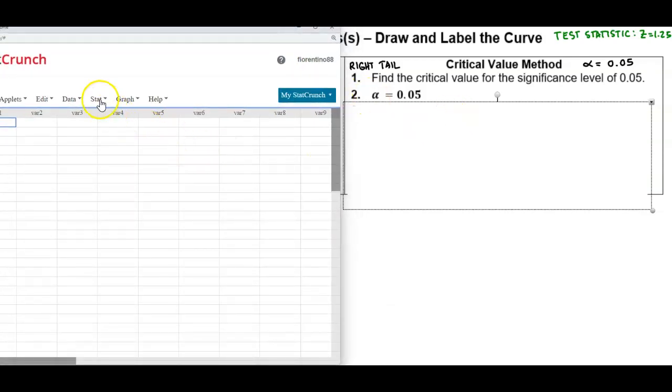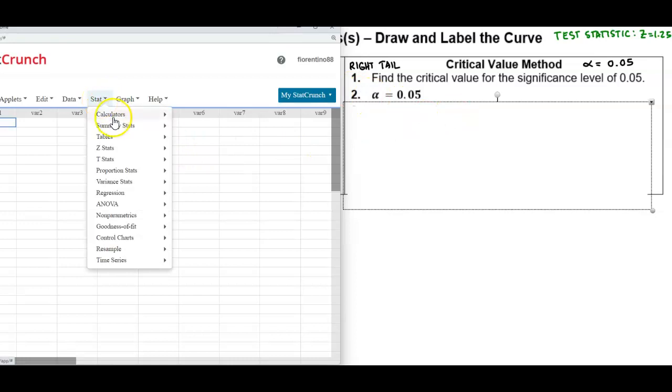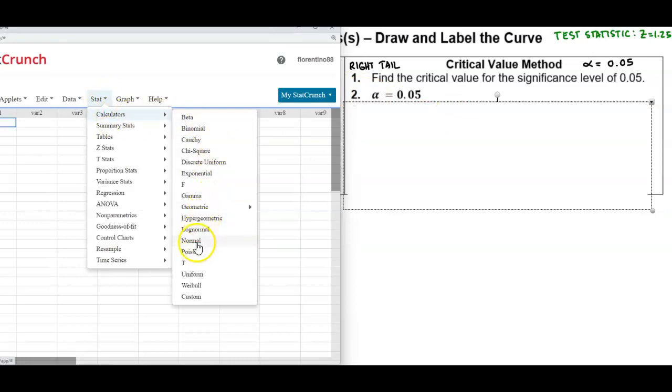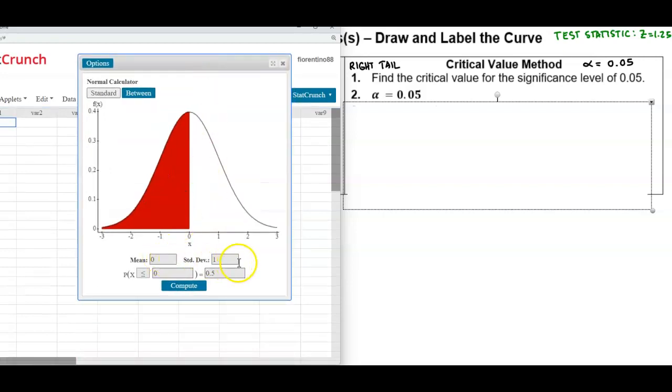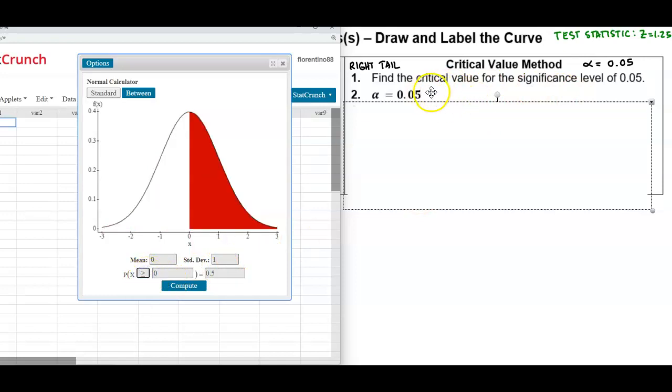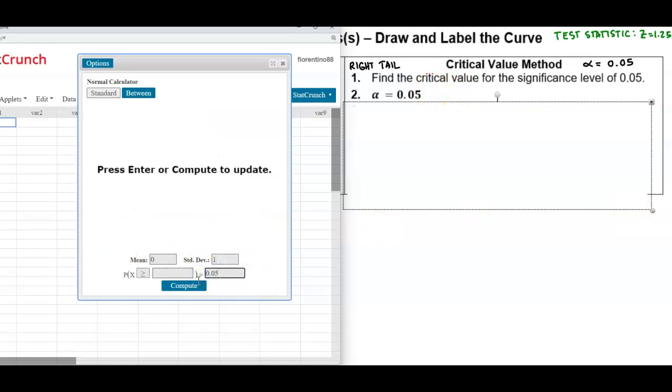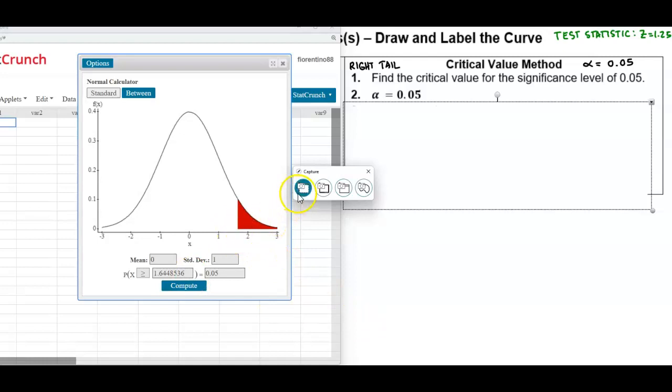So we're going to come in here, go to stat and then go to calculators and then scroll all the way down to normal. We know that we have 0 and then 1 and we want to find that value that's in the right tail, so we want to make sure it's going to be greater than or equal to, and now we're going to put in the area of 0.05 and then select compute and that's going to give us what this critical value is.